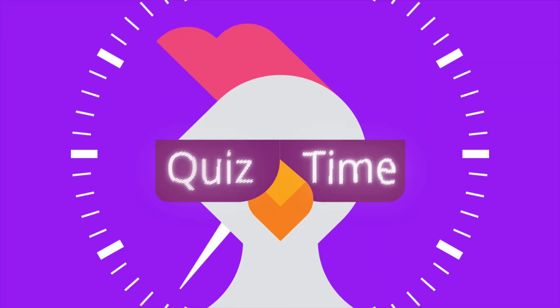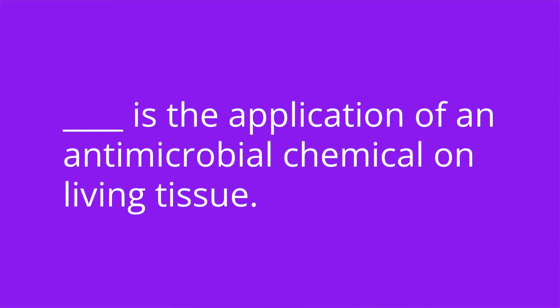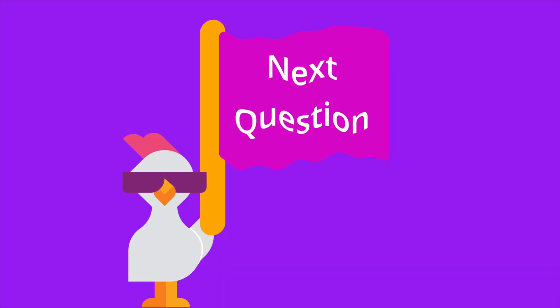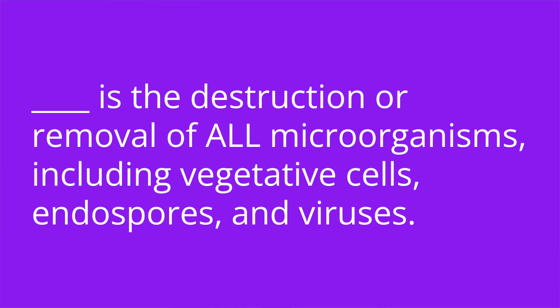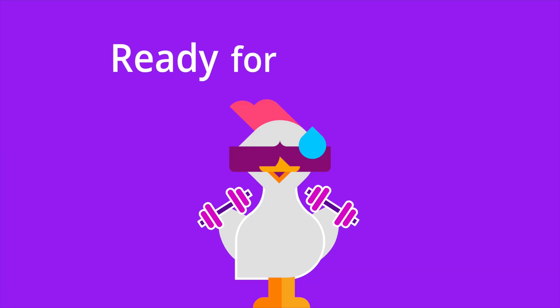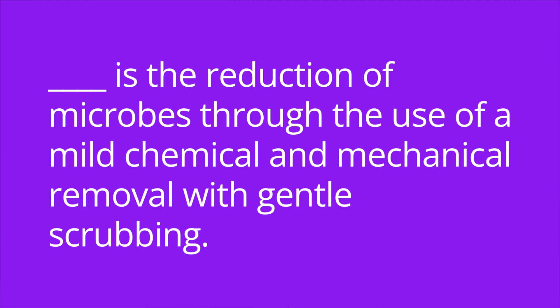It's quiz time — four fill-in-the-blank questions. Question one: blank is the application of an antimicrobial chemical on living tissue. The answer is antisepsis. Question two: blank is the destruction or removal of all microorganisms, including vegetative cells, endospores, and viruses. The answer is sterilization. Question three: blank is the reduction of microbes through the use of a mild chemical and mechanical removal with gentle scrubbing. The answer is de-germing.